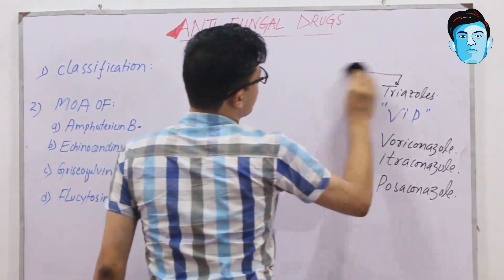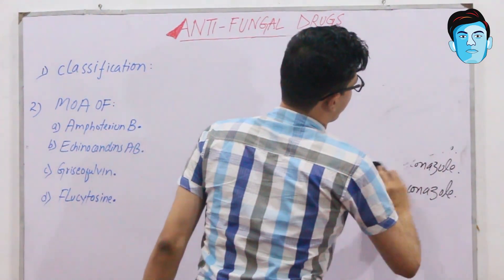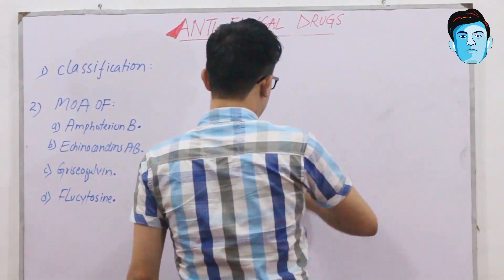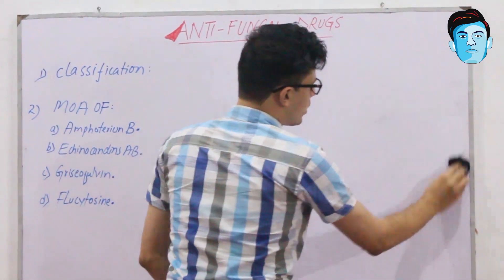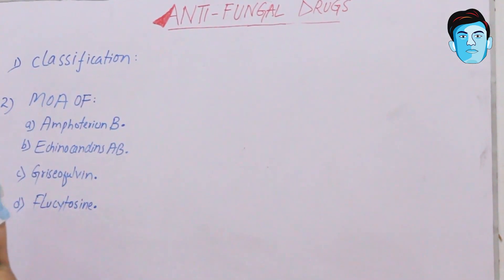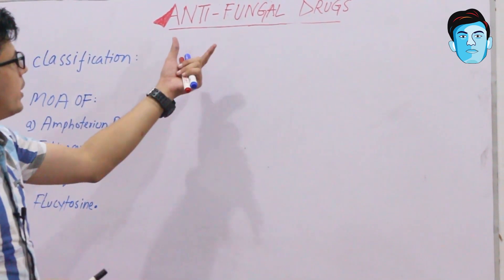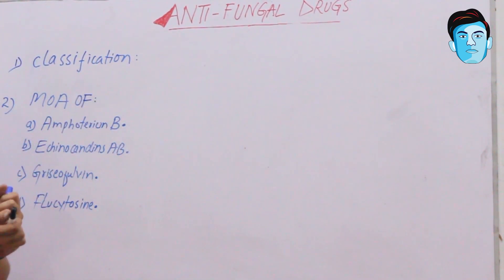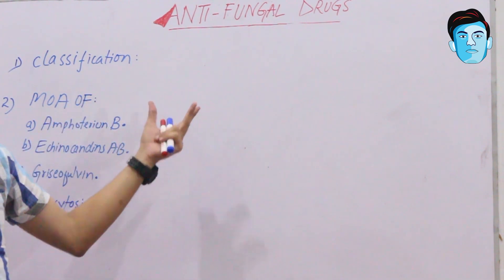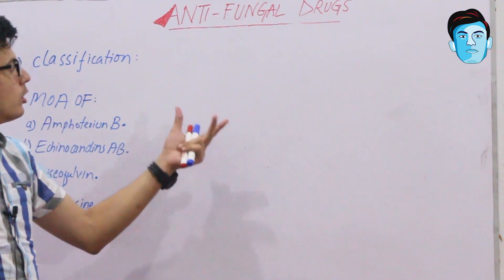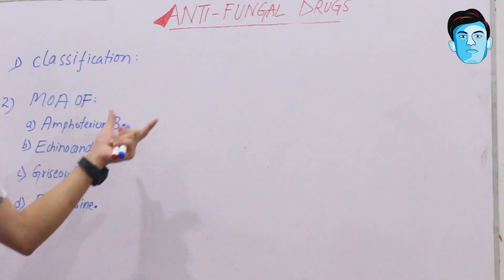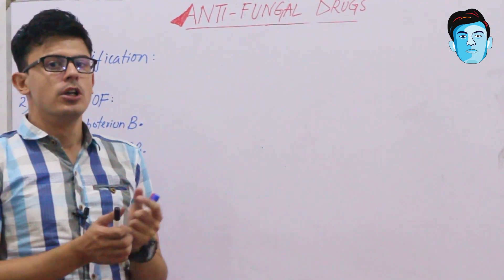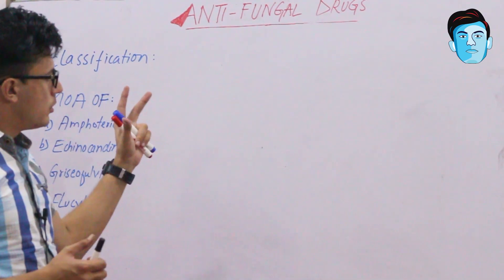Now we will talk about the general mechanism of action, which is a very important part of this lecture. Out of all antifungal drugs discussed, one of the most important is amphotericin B. Let's discuss its general mechanism of action.